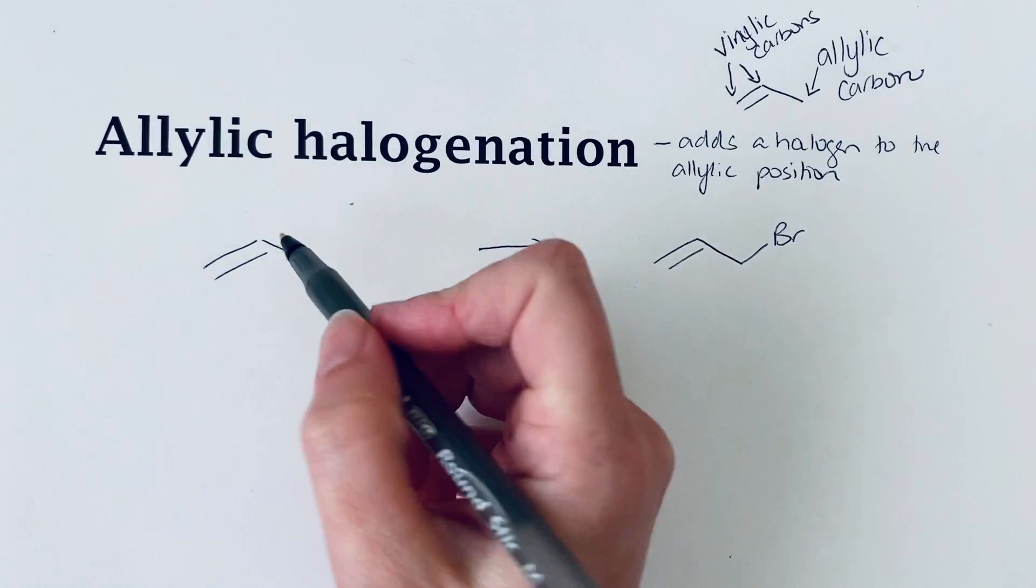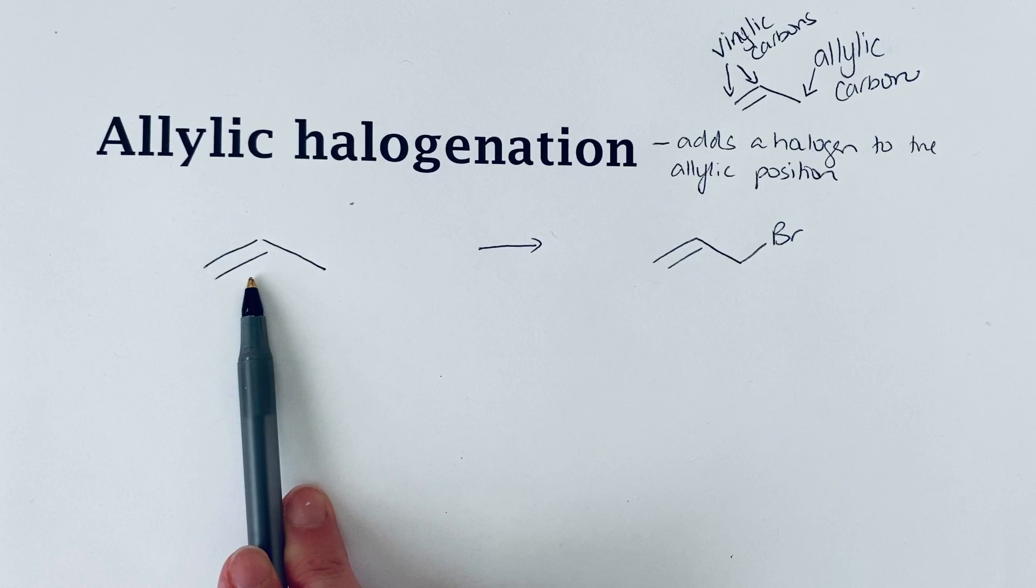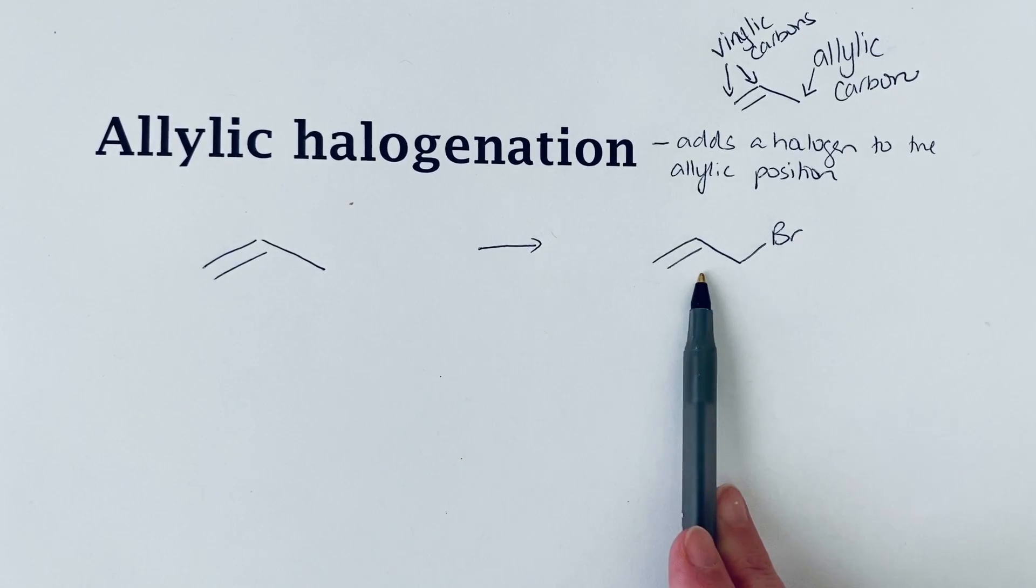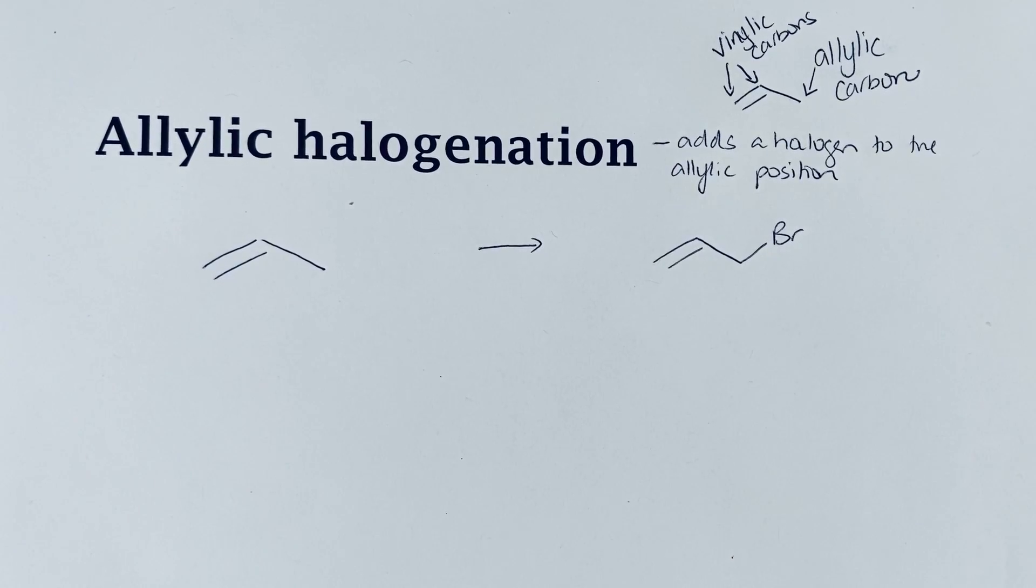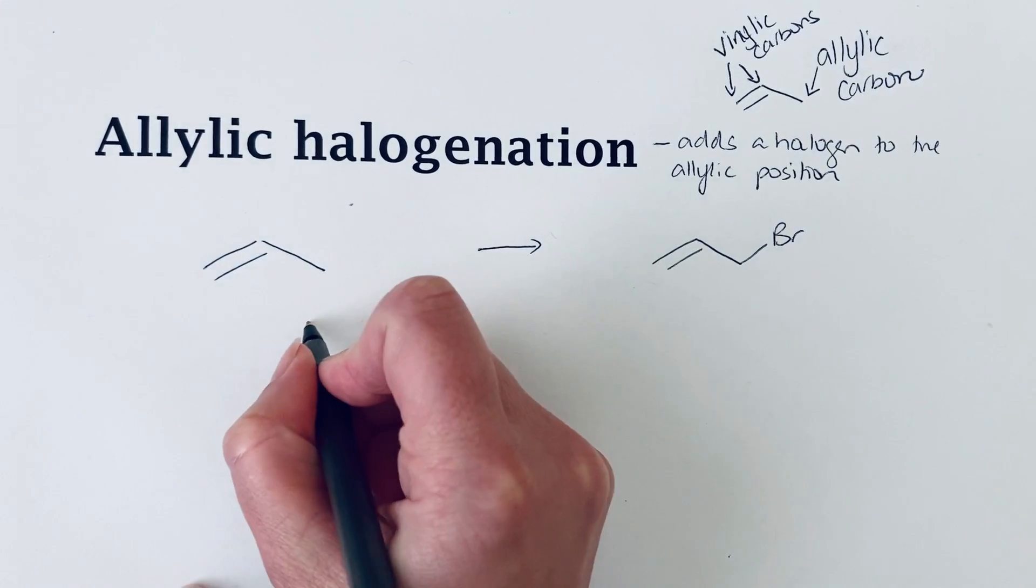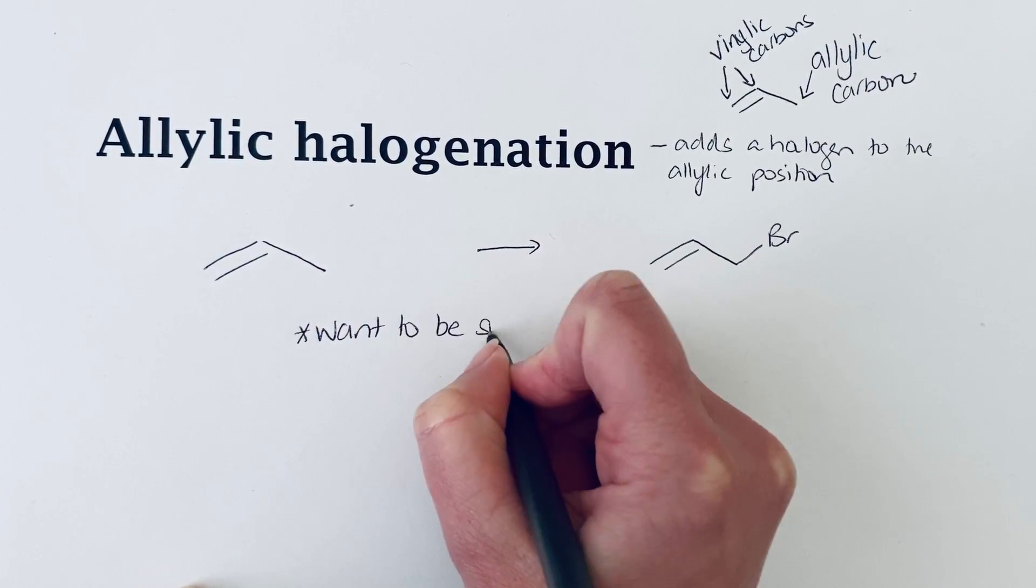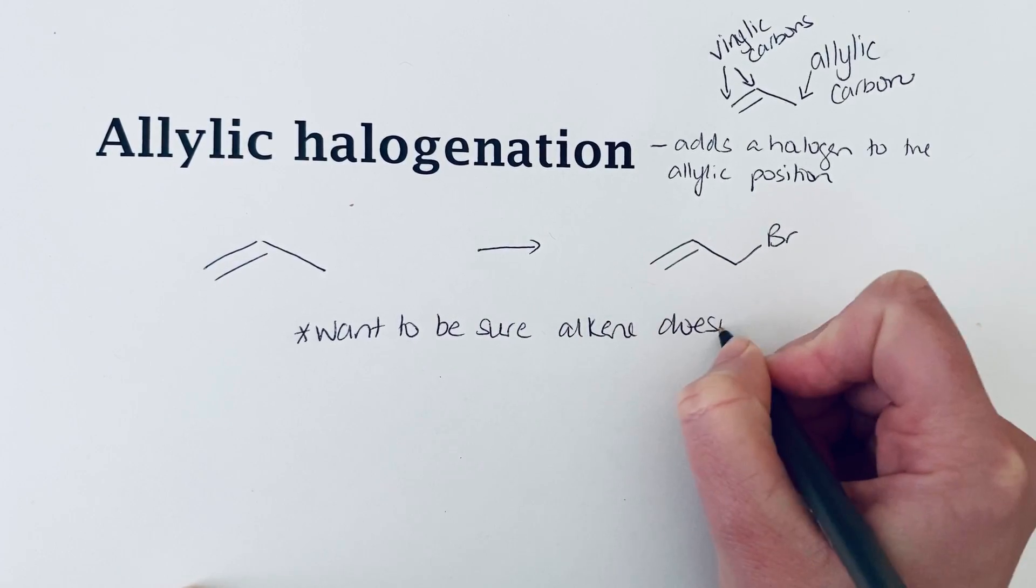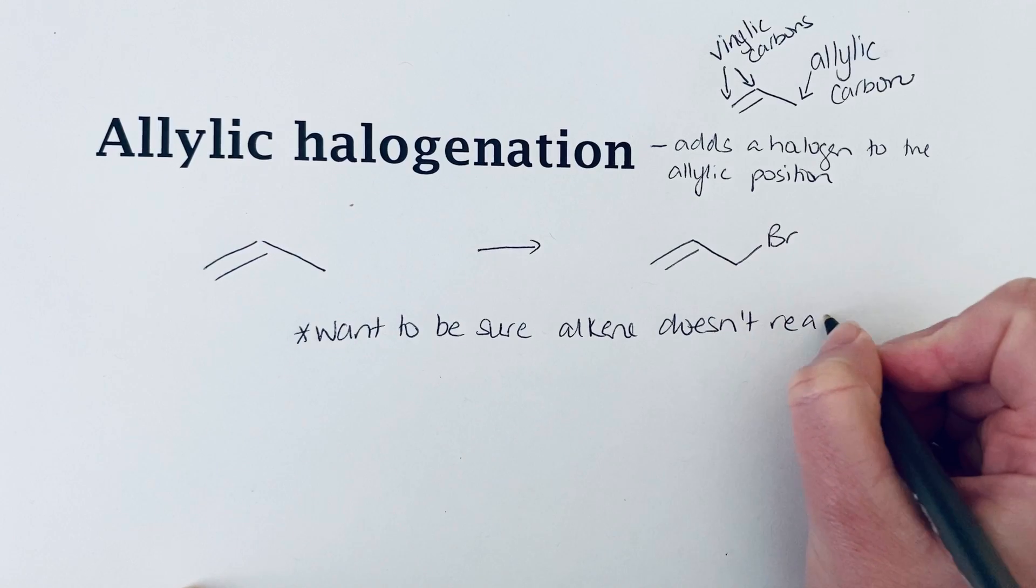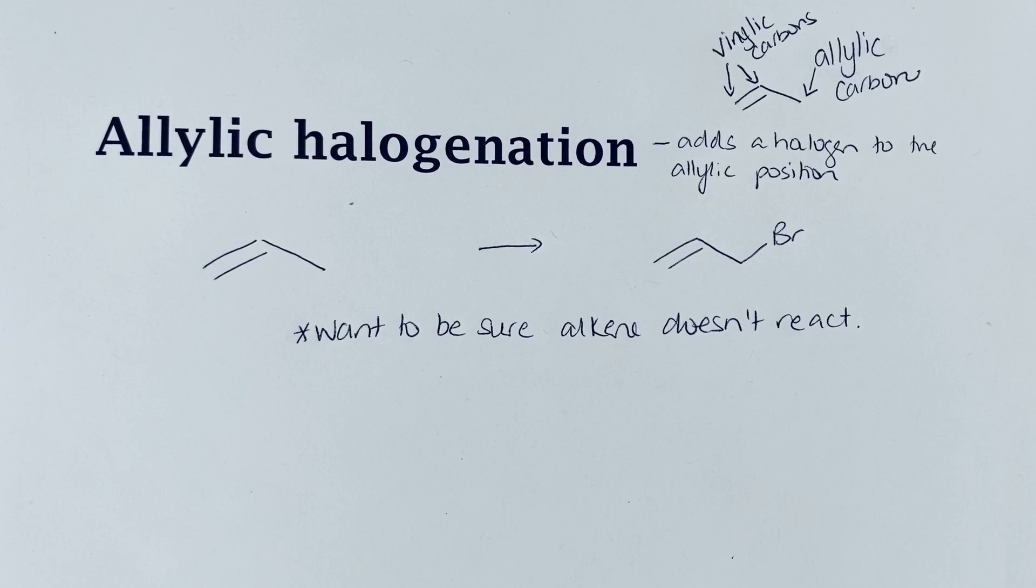In this case though, where you have this allylic system, you have an alkene in your starting material and you still have an alkene in the product. You want to make sure that the alkene does not react. We want to avoid reagents that might add across the pi bonds.